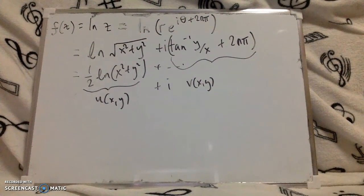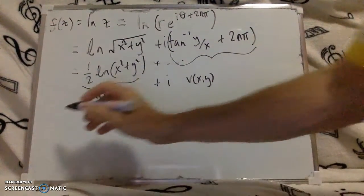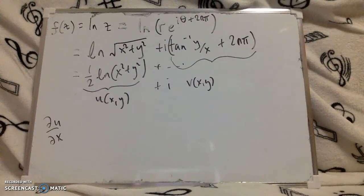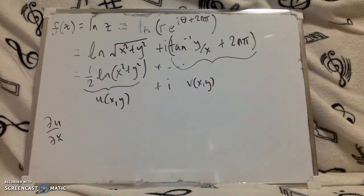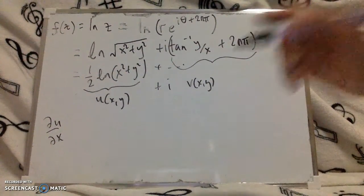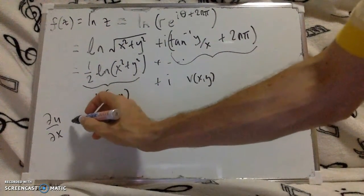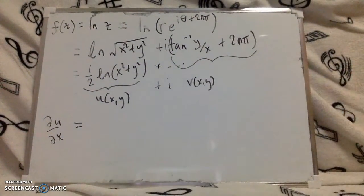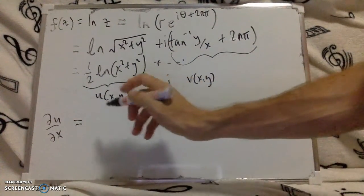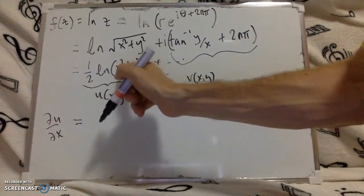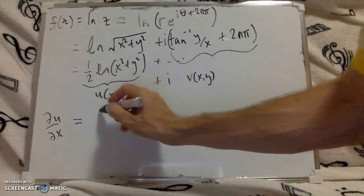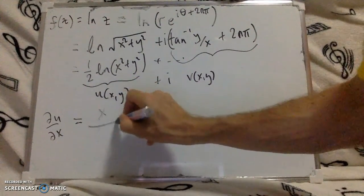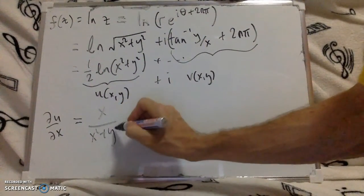So to test the Cauchy-Riemann, well what are the Cauchy-Riemanns? We need to know what du by dx and du by dy and dv by dx and dv by dy and test whether pairs of them are equal or not. So du by dx, differentiate log, we end up with 2x times the half, so we end up with x, and then divided by x squared plus y squared.